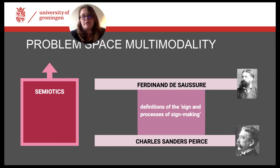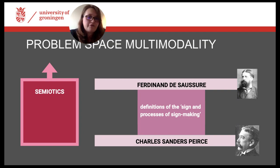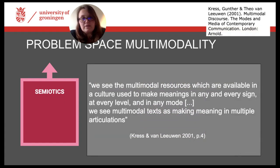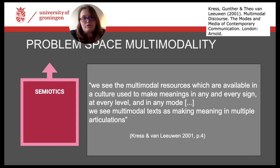What we've seen by only pointing to very small details of Saussure and Peirce's work is that signs and the processes of sign-making can be considered from various perspectives. The multimodal perspective is in fact a bit different to the semiotic perspective, even though strongly based on it. Gunther Kress and Theo van Leeuwen see the multimodal resources available in a culture as used to make meanings in any and every sign, at every level and in any mode, and they see multimodal texts as making meaning in multiple articulations. The traditional definitions of signs are thus only partially valid for multimodality, and the notion of semiotic mode instead of sign is preferred.